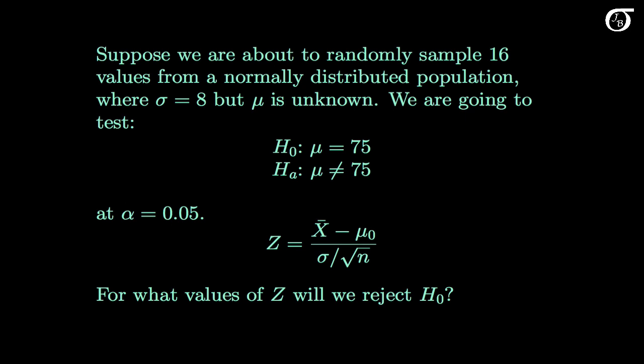Suppose we are about to randomly sample 16 values from a normally distributed population, where the population standard deviation sigma is known to be 8, but the population mean mu is unknown. We're going to test the null hypothesis that the population mean is 75 against a two-sided alternative hypothesis, and suppose that we feel a significance level alpha of 0.05 is reasonable for this situation.